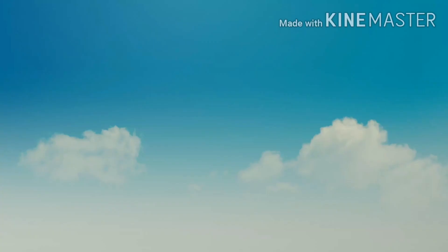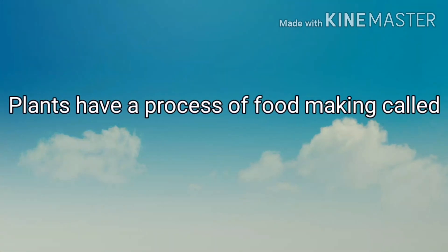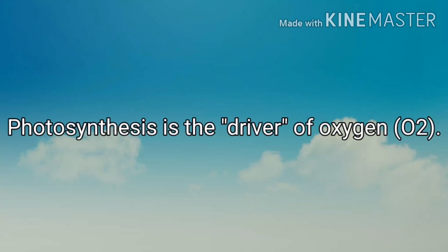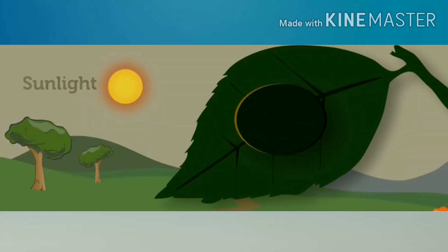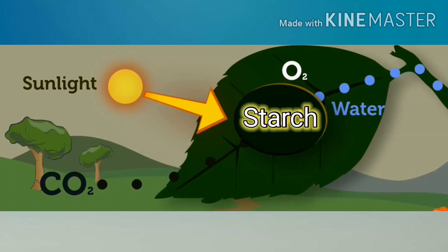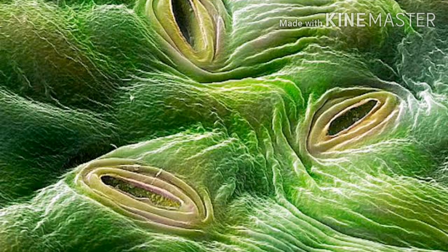This natural process is what we call the oxygen and carbon dioxide cycle. The cycle begins. Ang mga halaman ay may kakayahang gumawa ng sarili nilang pagkain. Plants have a process of food-making called photosynthesis. Photosynthesis is said to be the driver of oxygen. During this food-making process, plants produce starch, and as a result, they give off oxygen as a waste product. Ang oxygen ay nabuo dahil sa prosesong ito, at dahil ito ay a waste product, hindi na ito pakailanganin ng mga halaman. Kaya naman, ito ay pinapakawalan ng mga halaman sa hangin. Oxygen moves out of the plants through tiny openings in the plant's leaves called stomata.